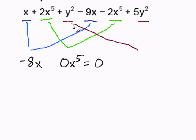Now we have y to the second power plus 5y to the second power. That is going to get us 6y to the second power.